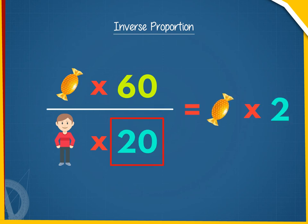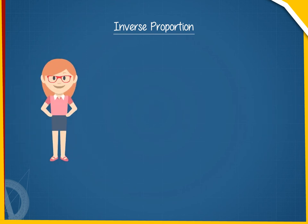If there are 20 children, each child will get 3 toffees. Thus, the number of children and the number of toffees each child gets vary inversely.